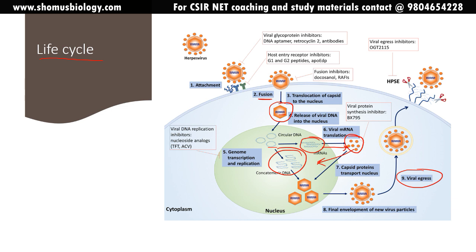There are drugs at multiple levels: one inhibits DNA replication, another inhibits fusion of the viral glycoprotein with the host surface receptor, another prevents viral egress, and another inhibits synthesis of viral proteins. These drugs, found at different stages of viral infection, are continuously tested to find the best cure against HSV-1 and herpes simplex virus generally.